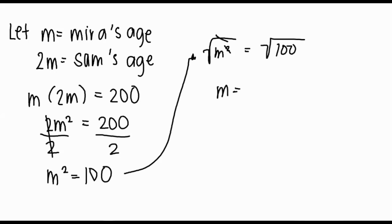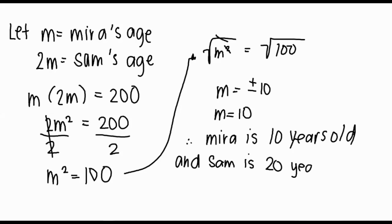Use the square root, and we will have m is equal to positive and negative 10. Always remember that ages are positive, so we will only use 10. So Mira is 10 years old, and Sam is 20 years old.